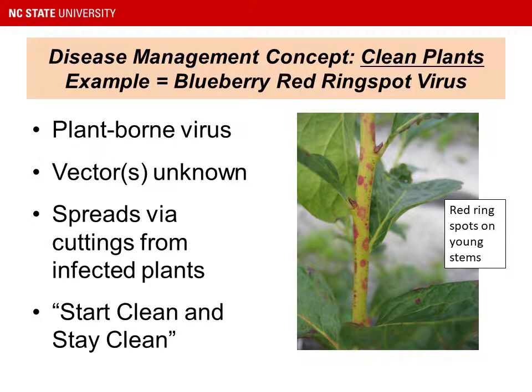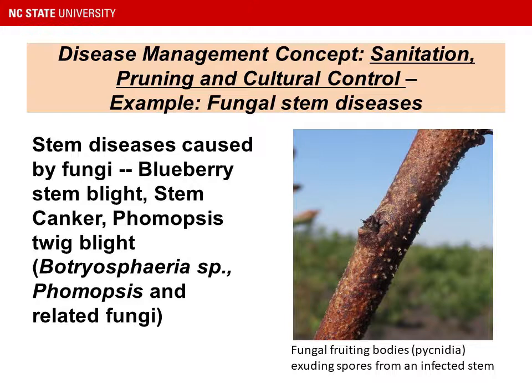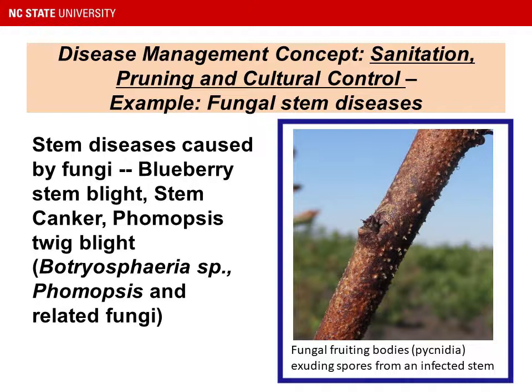One basic disease management practice for blueberries is pruning to remove dead or diseased stems. The example here is blueberry stem blight, but there are a number of ascomycete fungi, including Botryosphaeria and related species, that colonize blueberry stems. You can see in the image the fungal fruiting bodies — pycnidia on this stem — and they're exuding spores. This is a way that the fungus overwinters and spreads its spores around the blueberry planting. Anytime you can prune to remove weak, diseased, or dead wood, you're removing diseased organisms from the field.